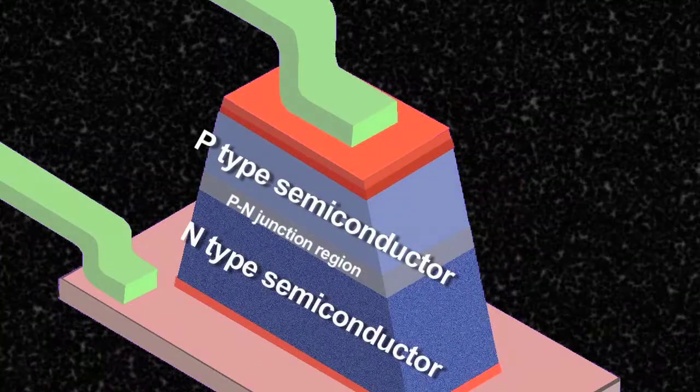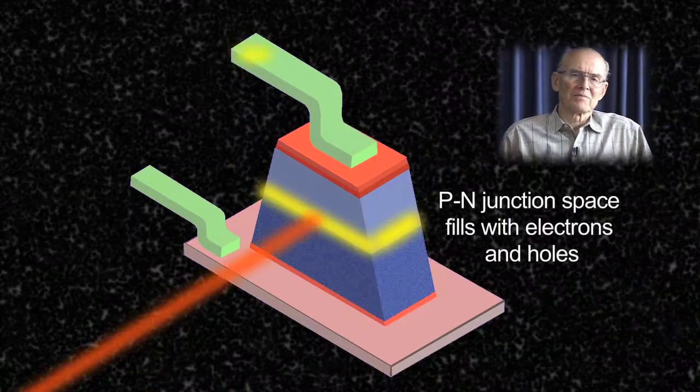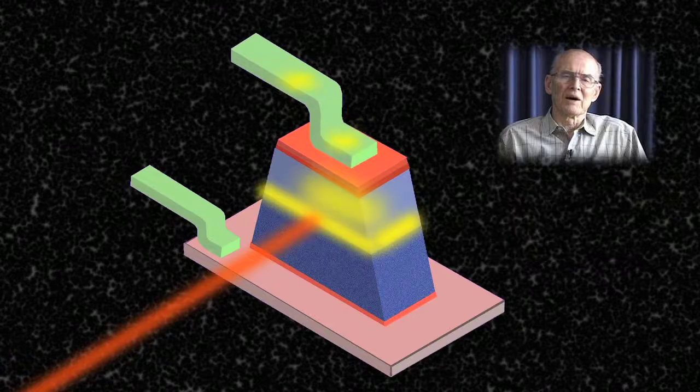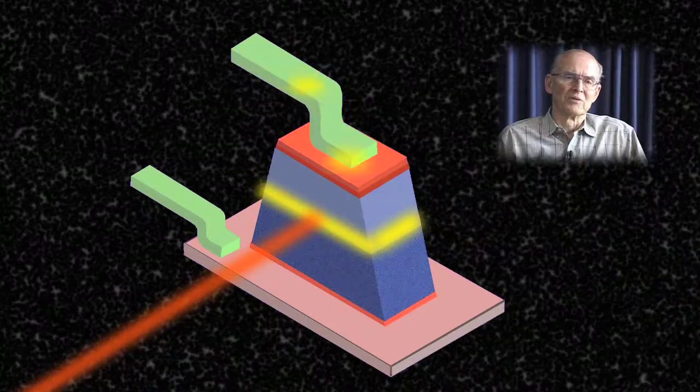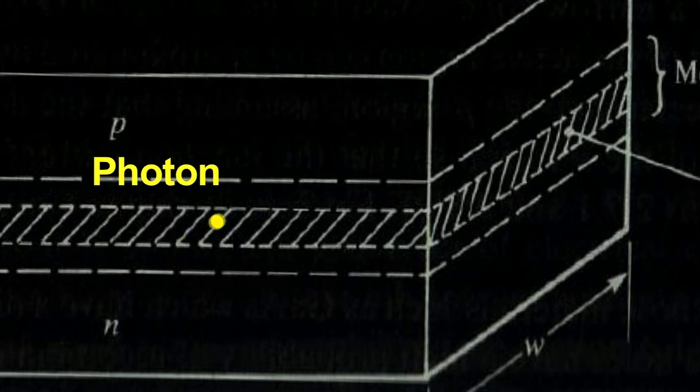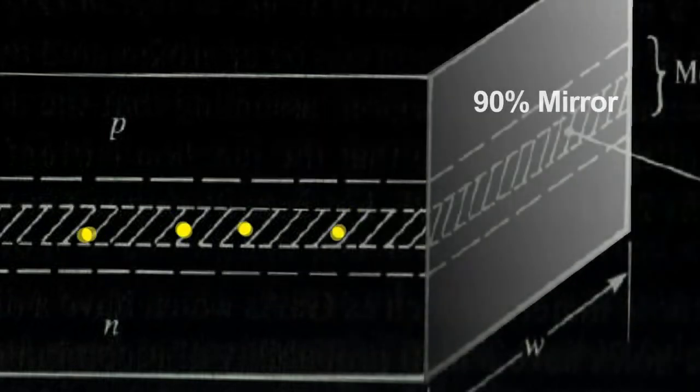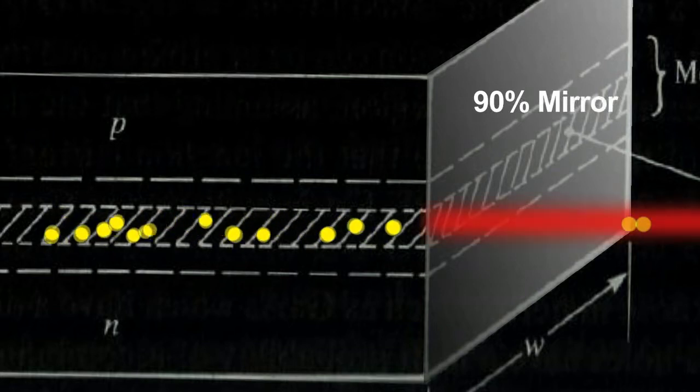And you pass a current through the diode that populates the space inside the junction with electrons and holes. And these recombine and produce light, which is bounced back and forth between the mirrors, and that inspires more electrons and holes to recombine and singles out.